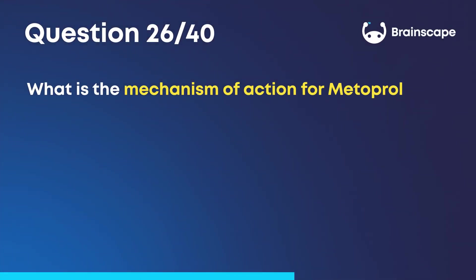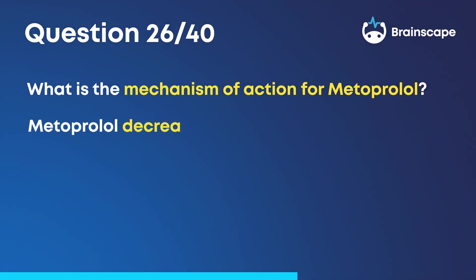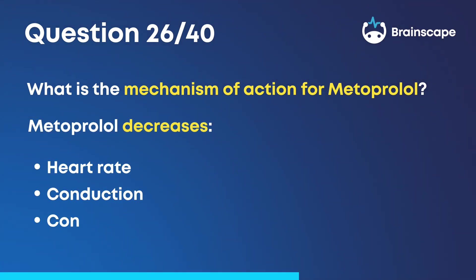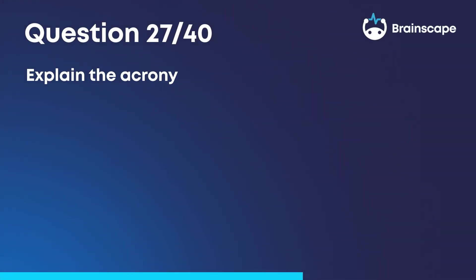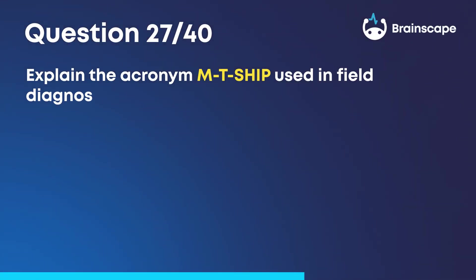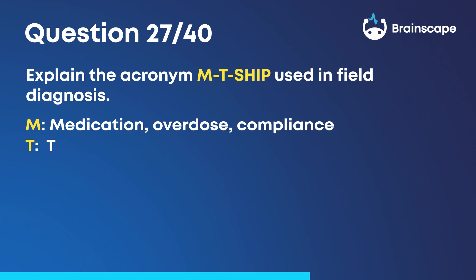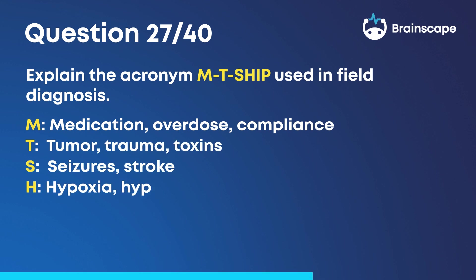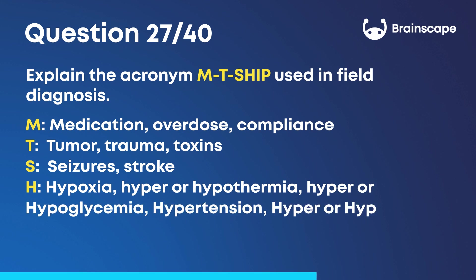Question 26: What is the mechanism of action for metoprolol? Metoprolol decreases heart rate, conduction, contractility, and cardiac output. Question 27: Explain the acronym MTSHIP used in field diagnosis. M: Medication overdose/compliance. T: Tumor, trauma, toxins. S: Seizures, stroke. H: Hypoxia, hyper or hypothermia, hyper or hypoglycemia, hypertension, hyper or hypokalemia. I: Infection, uremia. P: Psychiatric/behavioral.